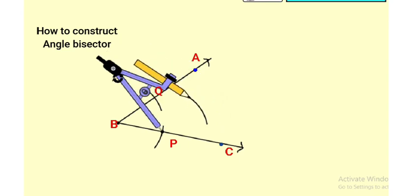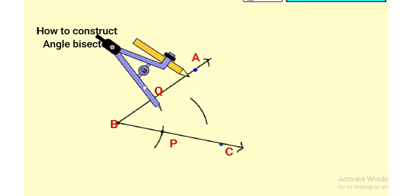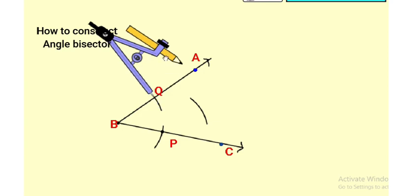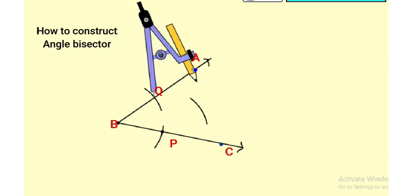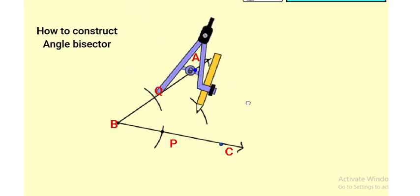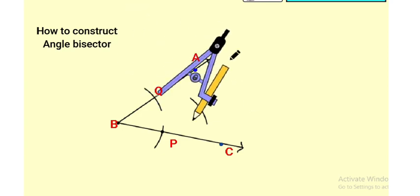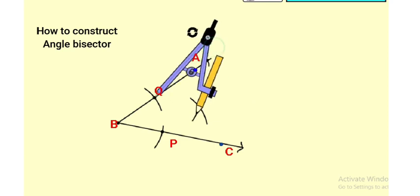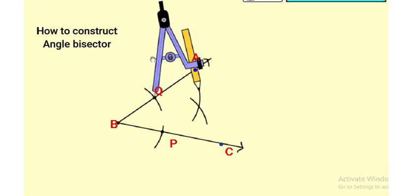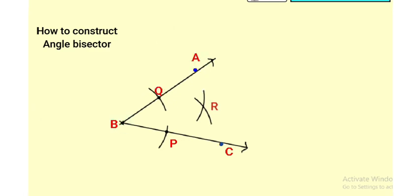Now draw an arc through point P inside the angle ABC, then draw an arc through point Q inside the angle ABC. Name this intersection point as R.